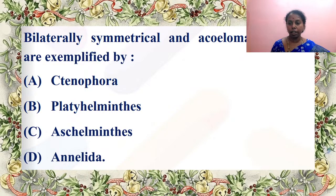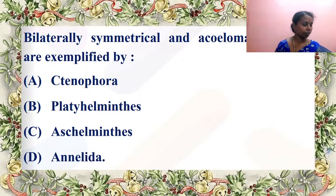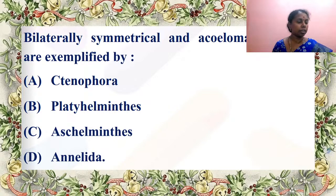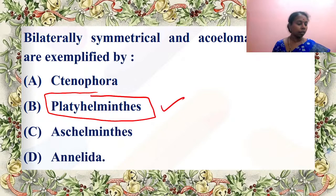Bilaterally symmetrical and acoelomate animals are exemplified by which phylum? It is B — Platyhelminthes. Acoelomate and bilaterally symmetrical is the characteristic feature of Platyhelminthes. Very correct answer by Arini.